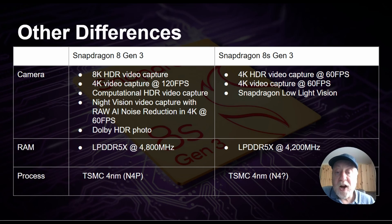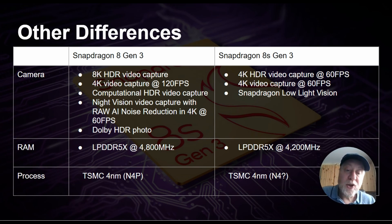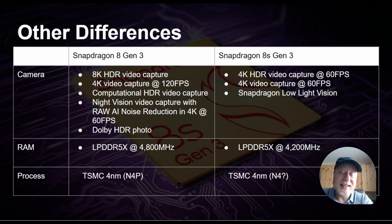A few other differences: the original 8 Gen 3 uses LPDDR5X at 4800 MHz, while the 8S Gen 3 uses LPDDR5X at 4200 MHz. The 8 Gen 3 is built on TSMC 4nm N4P process. My thinking is the 8S Gen 3 may use TSMC's first-generation 4nm node — just the 4N — though we need confirmation. They're likely not built on the same process node, which helps lower the cost slightly.